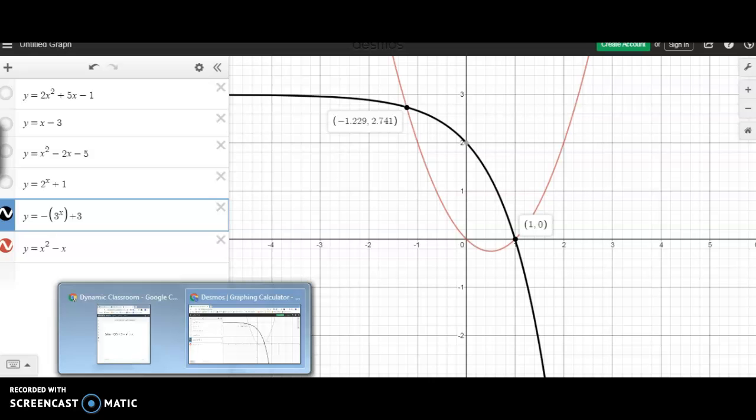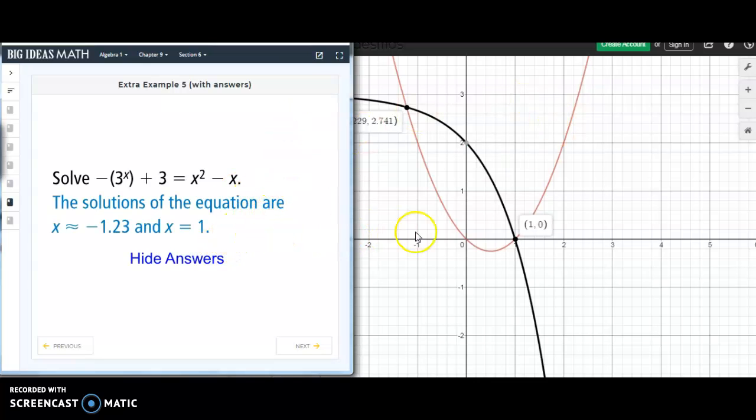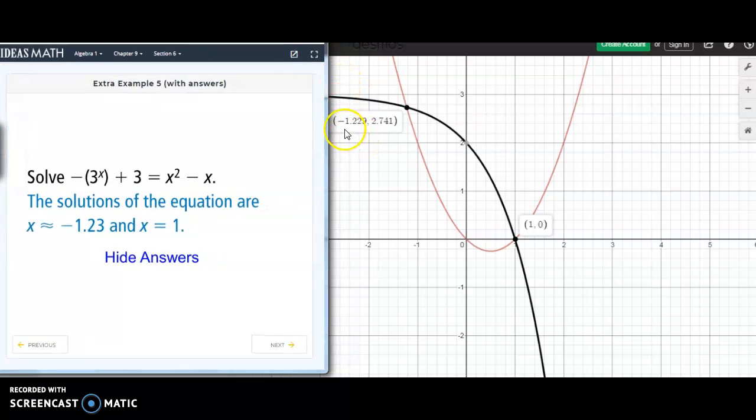So, that's another application of solving systems by graphing. So, let me pause this so we can write the results down. So, the solutions of the equation are when x is equal to 1. So, when x is equal to 1, y is equal to 0. And then, the other solution is negative 1.3 or 1.23 when you're rounded off to the nearest hundredth.